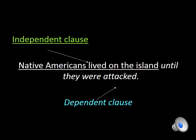This slide shows another example. We have our independent clause that is underlined and our dependent clause in italics, and together they make a sentence: 'Native Americans lived on the island until they were attacked.' The underlined part, 'Native Americans lived on the island,' stands alone — it's the independent clause. The italicized part, 'until they were attacked,' is the dependent clause. 'They' is our subject, and 'were attacked' is our helping verb plus main verb. That italicized part needs the underlined part in order to make sense.